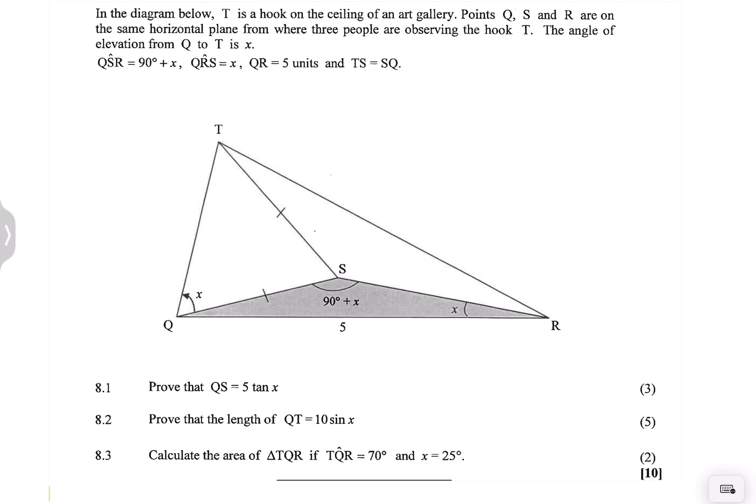So they said to us in the diagram below, we've got T, which is a hook on a ceiling of an art gallery. Points Q, S and R are on the same horizontal plane from where three people are observing the hook T. They say the angle of elevation from Q to T is X. And they've given us angle QSR, which is 90 plus X. QRS is X and QR is five units. And they told us that QS is equal to ST.